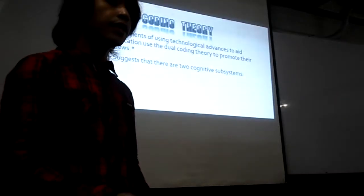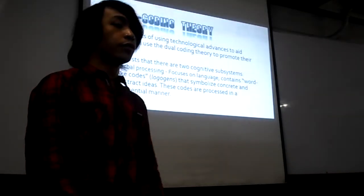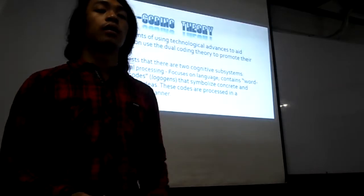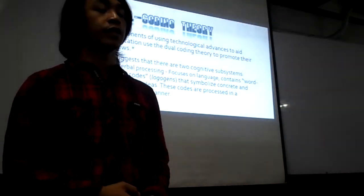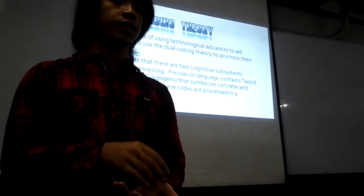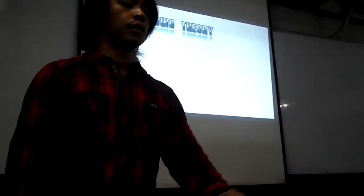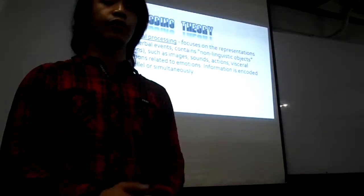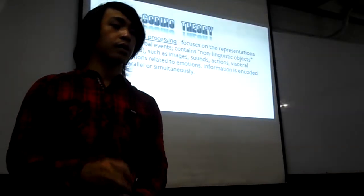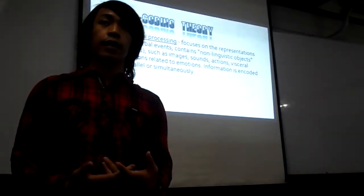The Dual Coding Theory suggests two cognitive subsystems. First is verbal processing, which focuses on the language or the audio part of the information — this is where logogens come from, which we will be discussing later. The other is non-verbal processing, which focuses on the representations of non-verbal events and mainly focuses on the mental picture of the verbal stimuli.